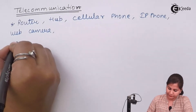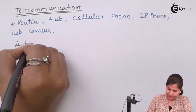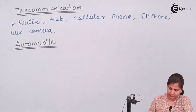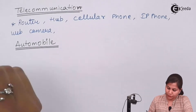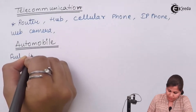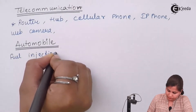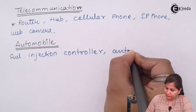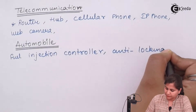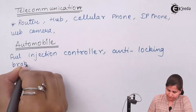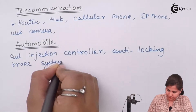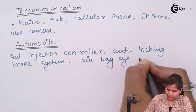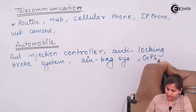In the field of automobiles, there are examples of embedded systems like the fuel injection controller, airbag system, GPS, and cruise control.